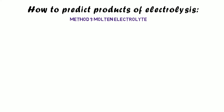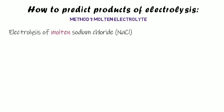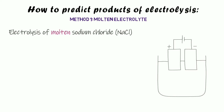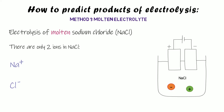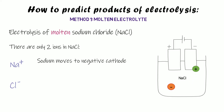So let's think about predicting the products when our electrolyte is molten. We're going to think first about sodium chloride that's molten — all that means is we've taken some solid sodium chloride and melted it. There are only two ions in sodium chloride: a positive sodium ion and a negative chloride ion. When you pass electricity through this electrolyte, the positive sodium ions are attracted to the negative electrode — the cathode — so sodium moves to the cathode, and when it gets there it turns back from an ion into an atom.